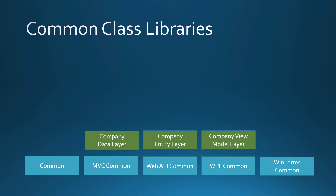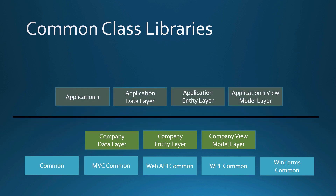For example, working within the finance industry, there's probably a set of common tables you want to model. So I would create a company data layer, a company entity layer, and a company view model layer. Then as I'm building my applications, I'll also have DLLs just for that application — an application data layer, an entity layer, and a view model layer for tables unique to that application. The great thing is that application can also use all of the company-level ones as well.